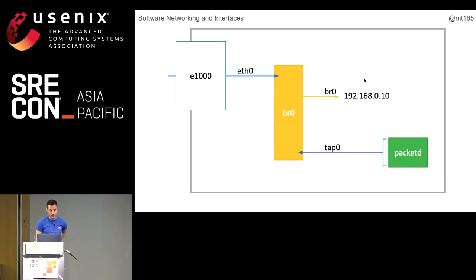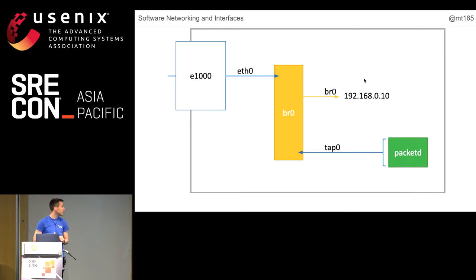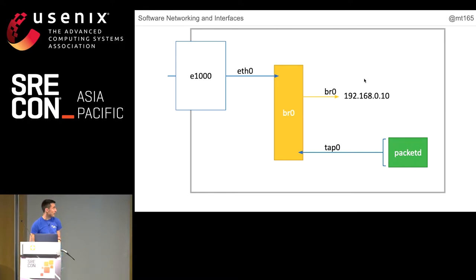Luckily, Linux bridges have what's called an implicit port or a host port. Imagine you've taken a physical switch, plugged two computers in, and now you want to start talking to the rest of the world — you can get another cable and plug it in. You always get one of these things for free with every bridge. This is what actually started me on the rabbit hole of working all this stuff out because I got really confused by it. This interface is called BR0.